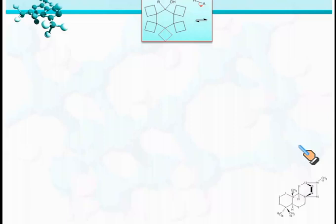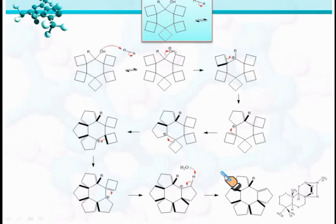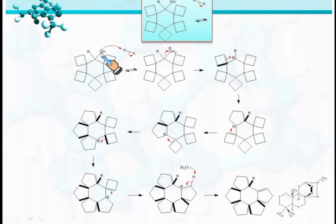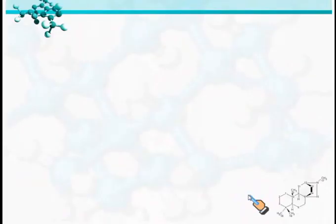When this compound is treated with acid, all the four-membered rings are converted into five-membered rings. The reaction mechanism follows this pathway: first the OH group undergoes protonation, then loss of water generates a carbocation, then a bond migration takes place, converting the four-membered ring into a five-membered ring, generating a new carbocation, and finally loss of a proton forms this compound.